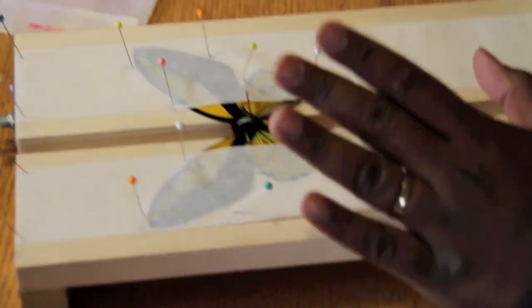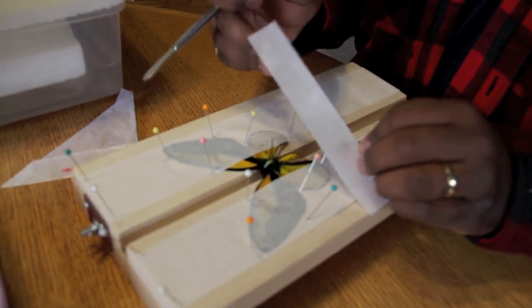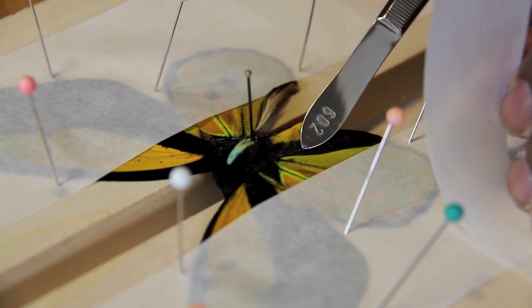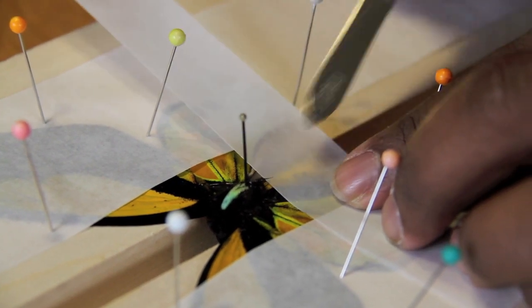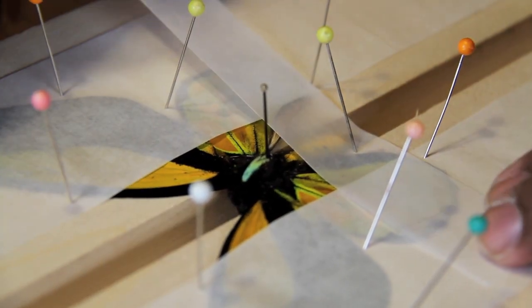Now, before we continue to fix the specimen, because this is a birdwing, we need to address the issue of the scent patches on the male. So, to make it look proper, what we're going to do is we're going to fold the scent patches down, exposing the black pigmentation. So, I've taken a piece of tracing paper, cut it to a smaller size. And I'm going to use the other side of the forceps, not the sharp side. And I'm just going to gently place some pressure to get it to fold over. And then, using the force of the tracing paper, I press it down, and then I immediately secure that into place without penetrating the wings.